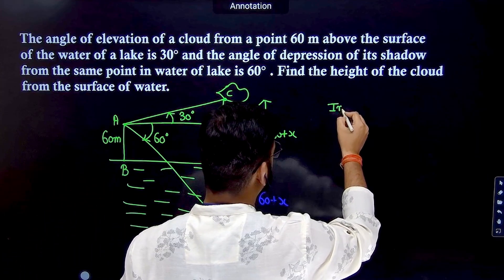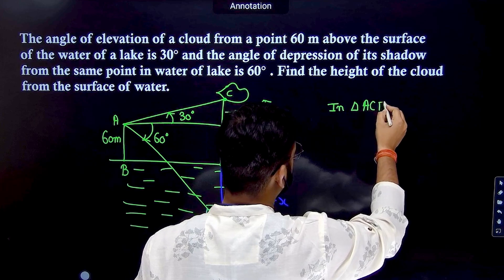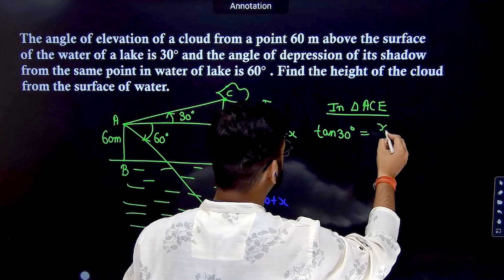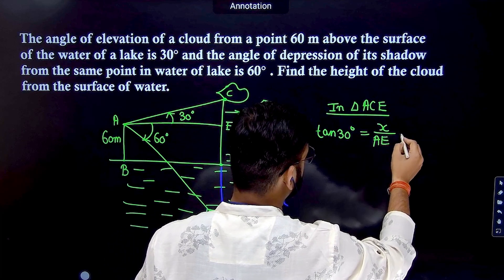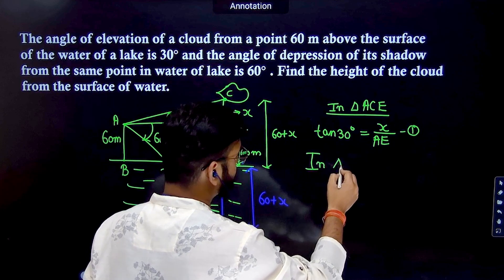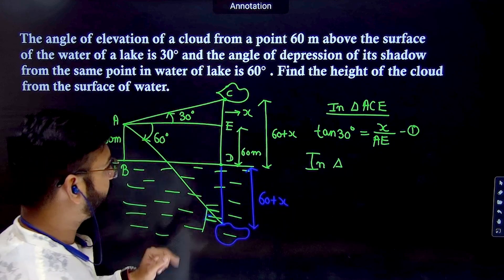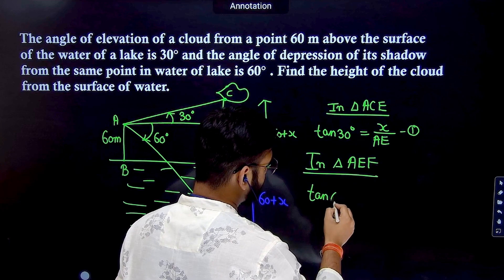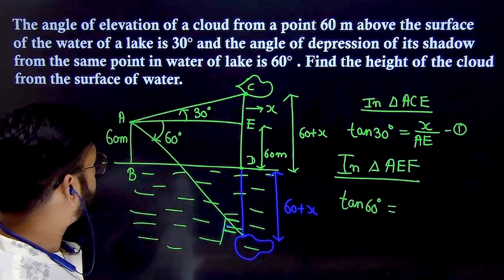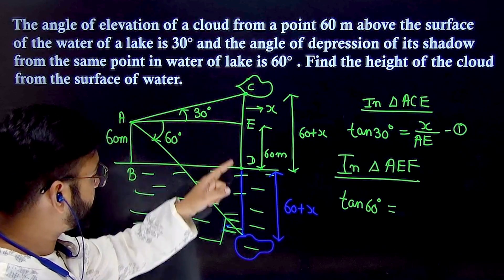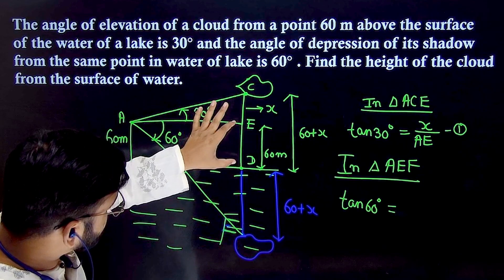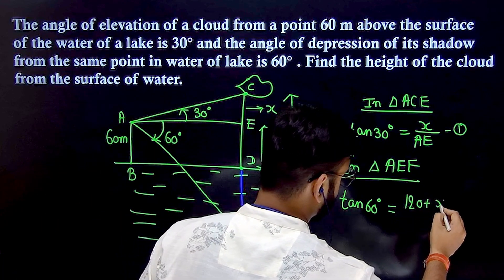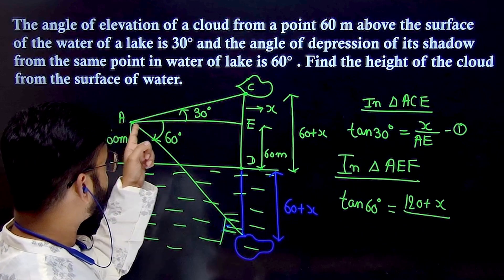In triangle ACE, tan 30° = X/AE. In the bigger triangle AEF, tan 60° = (120 + X)/AE. Be careful here—in triangle AEF, the total height is 60 + 60 + X = 120 + X, and the base is AE.